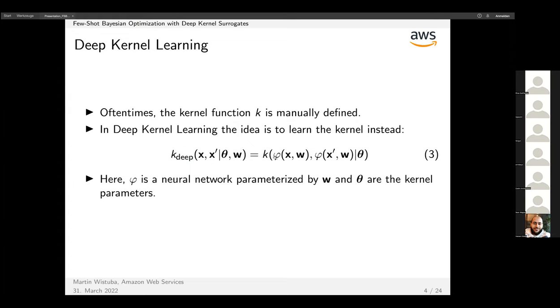In the literature, there was also the idea of deep kernel learning. What that means is you apply a transformation φ on your input x before you pass it to a standard kernel like an RBF kernel. This function φ is parameterized by parameters w, and that could potentially be any function, but for simplicity one would use a neural network.